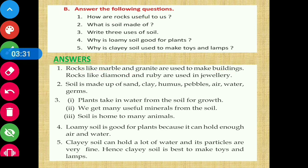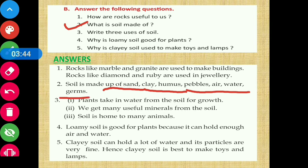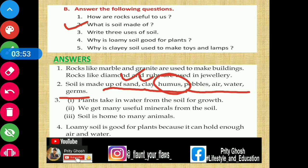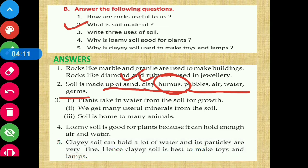Question number two: what is soil made of? Soil is made of sand, clay, humus, pebbles, air, water, and germs. Humus consists of the dead and decayed remains of plants and animals — when a plant or animal dies, its decomposed parts mix into the soil over time. So sand, clay, humus, pebbles, air, water and germs are all present in soil.